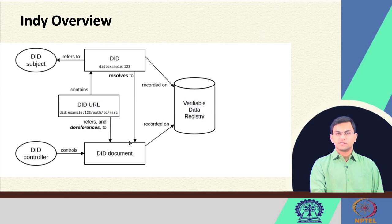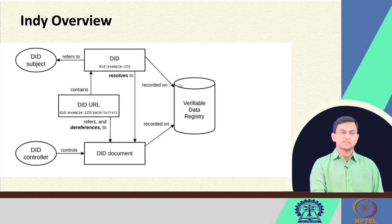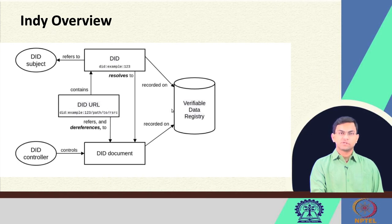If we consider a decentralized identifier management architecture, there are several components: the DID subject, which is the subject the DID or decentralized identifier refers to; the DID URL, which is the unique identifier through which it can be addressed; and the DID document, which is controlled by a controller. In this architecture, the verifiable data registry is a very important component — on this registry, DID documents are stored against DID URLs, and given a particular DID the document can be resolved from it. If this registry is centralized, then decentralized identifiers do not make sense.